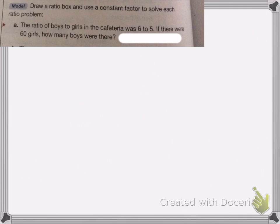Okay? All right, on this next one, it wants us to draw a ratio box and use the constant factor to solve this problem. The ratio of boys to girls in the cafeteria was 6 to 5. If there were 60 girls, how many boys were there?